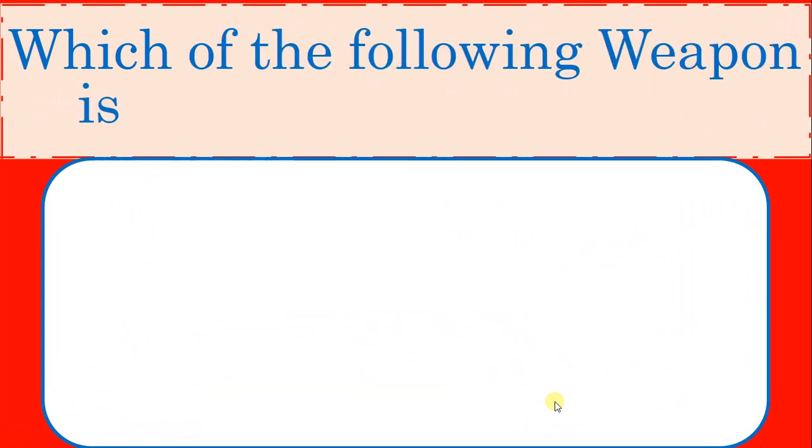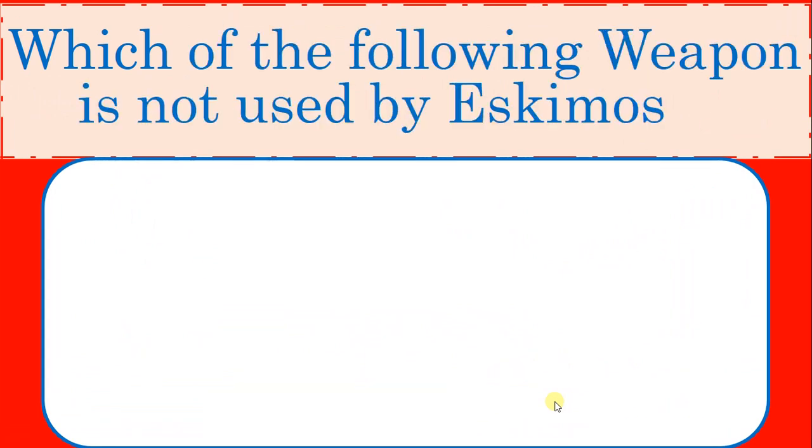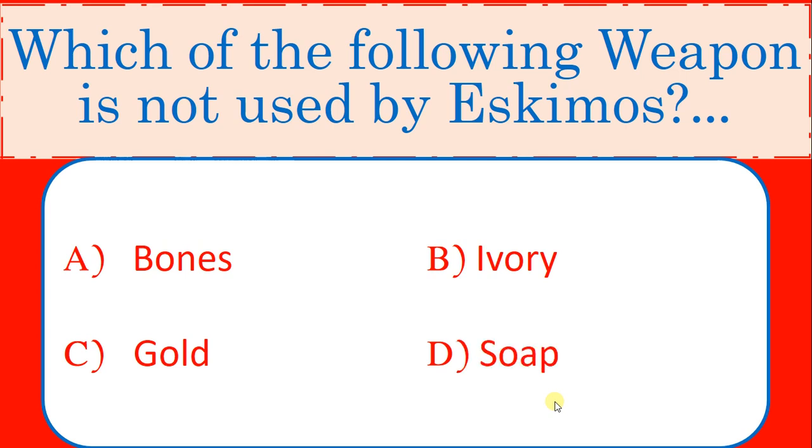Which of the following weapon is not used by Eskimos? Options: Bones, Ivory, Gold, Soapstone. Correct answer: Gold.